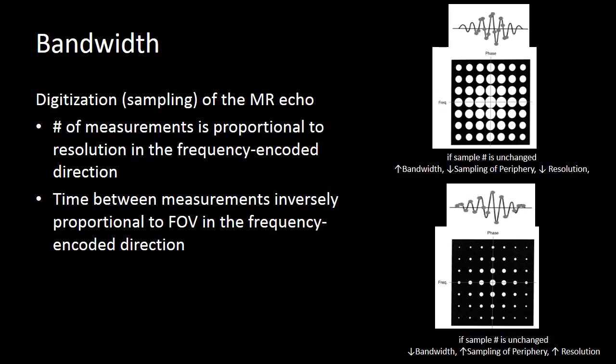How does that impact our image? Well, if we increase our bandwidth without taking more measurements, we end up sampling less of the periphery of k-space. And because we sample less of the periphery of k-space, our resolution decreases.